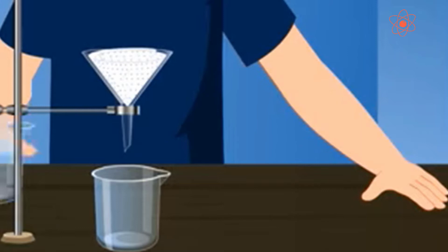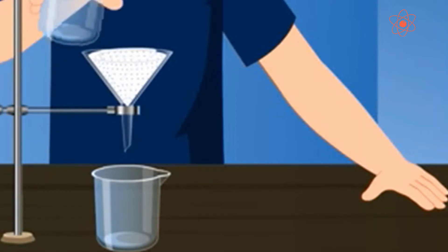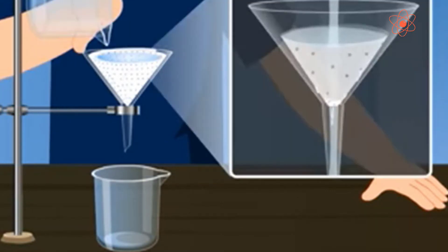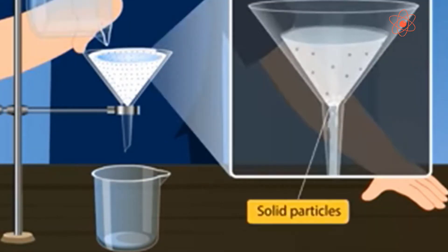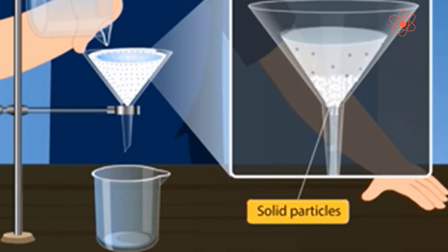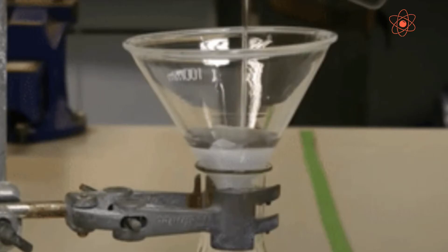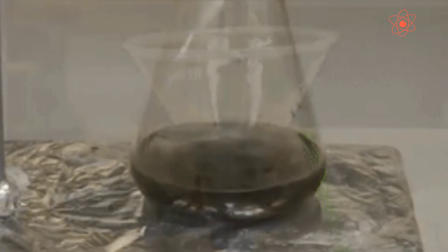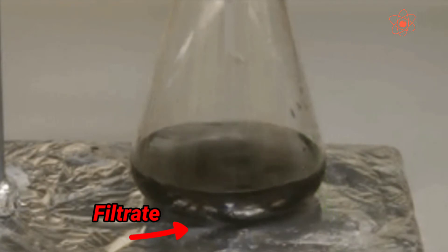In this method, a solution is passed through a filter. The filter allows the liquid to pass through and retains the solid particles. The solid particles retained by the filter are known as the residue. The clear liquid collected after the filtering process is called the filtrate.